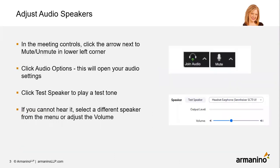You can access your audio settings and test your audio when you are already in the meeting. At the bottom left-hand corner of the Zoom toolbar, you'll find either the headphone or microphone logo to join audio or mute and unmute respectively. Click join audio to choose whether to connect your computer to audio or dial in with a phone. Once connected, you can click mute or unmute to control your audio.